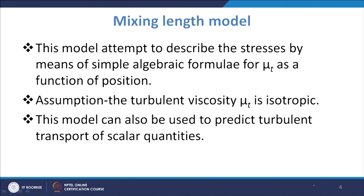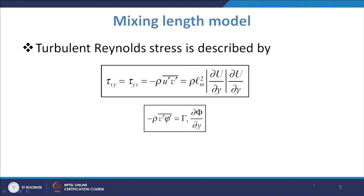Looking at the mixing length model in detail — it attempts to describe the stresses by means of a simple algebraic formula for μ_t as a function of position. The assumption is that turbulent viscosity μ_t is isotropic and can be used to predict turbulent transport of scalar quantities. The turbulent Reynolds stress is described as ρ l_m² (∂ū/∂y)|∂ū/∂y|.